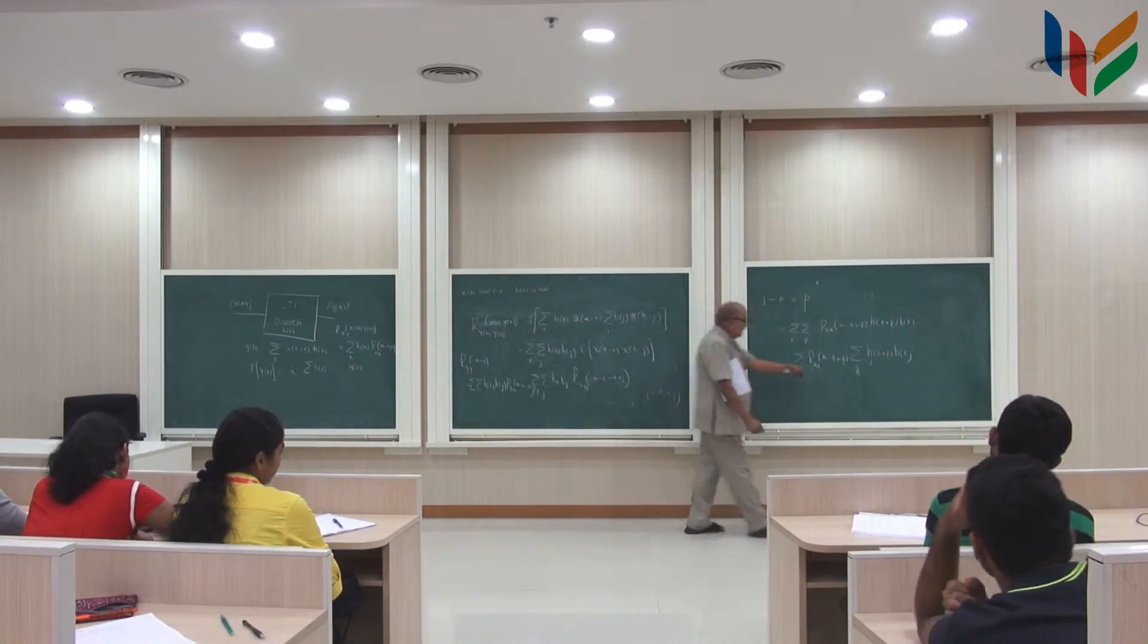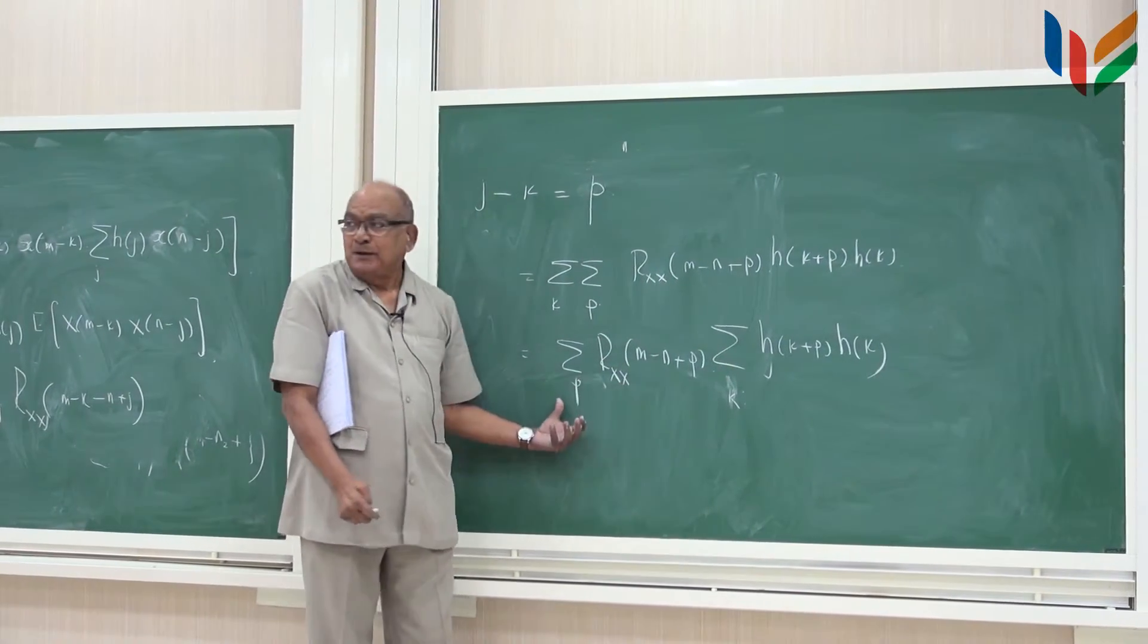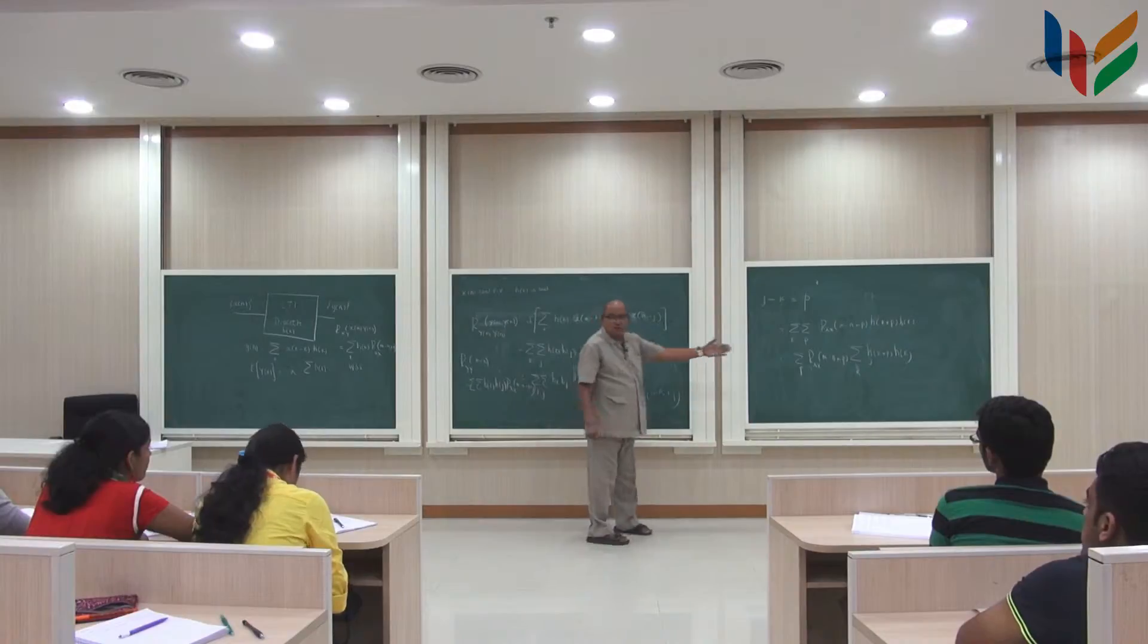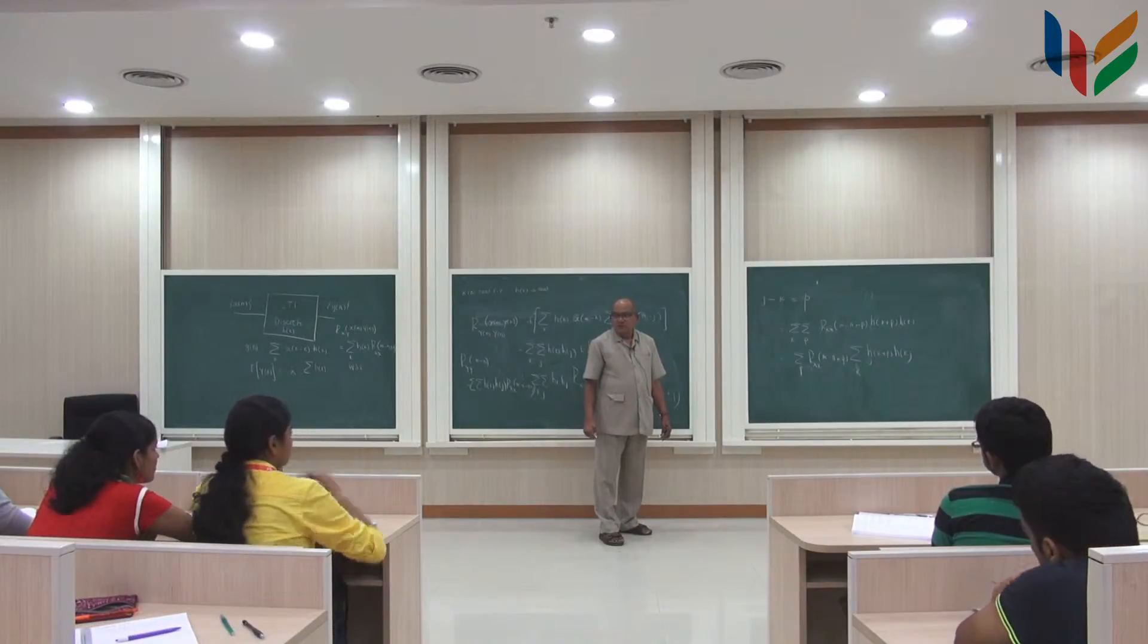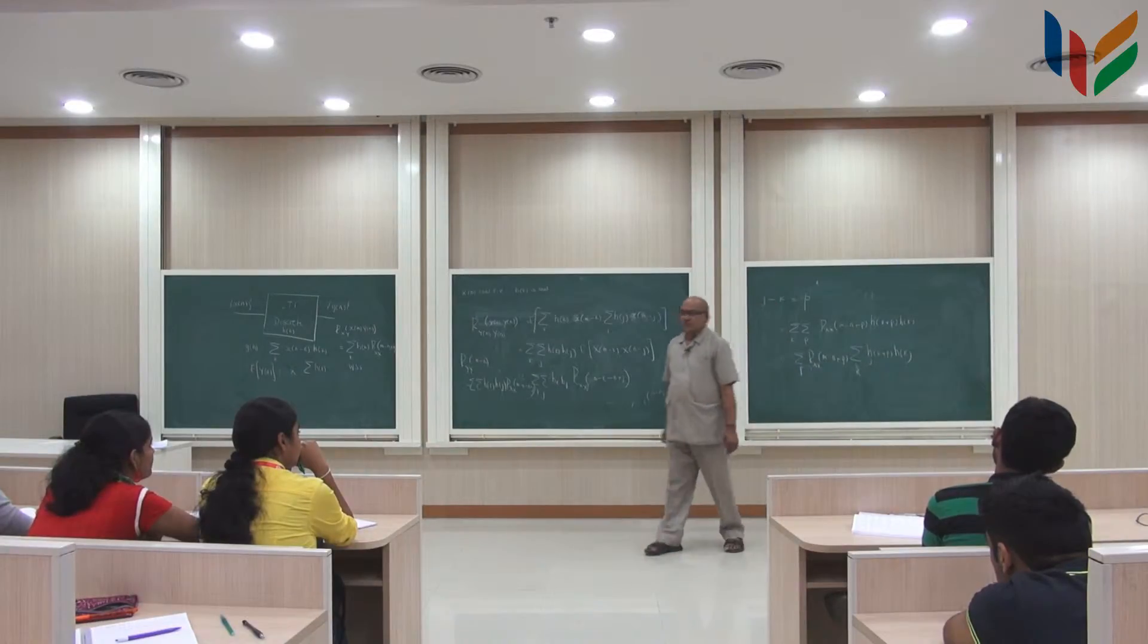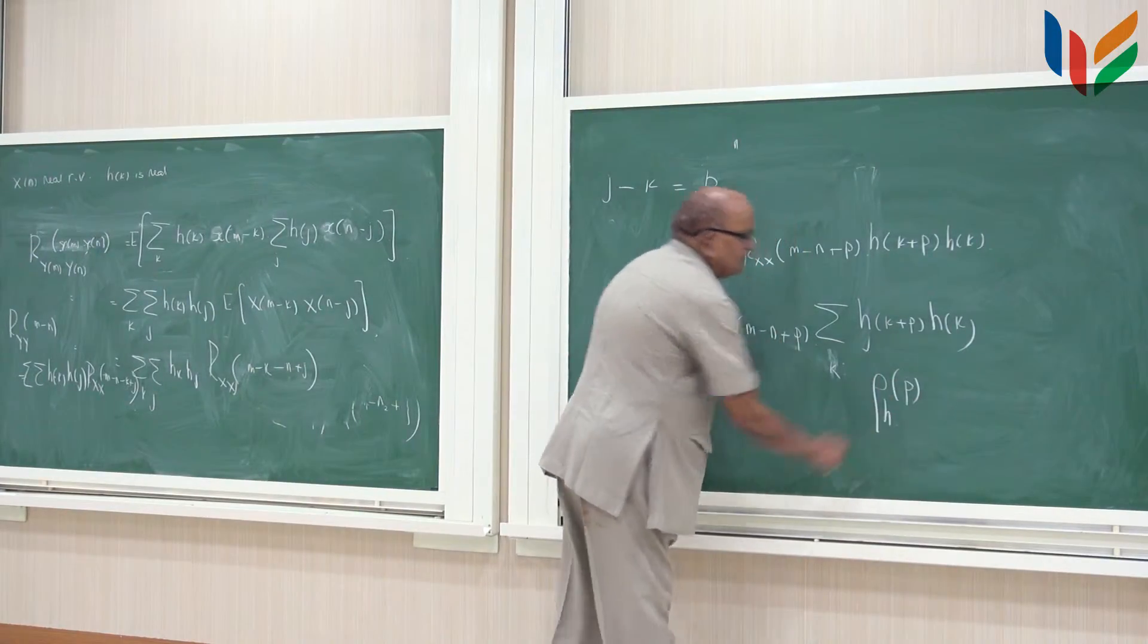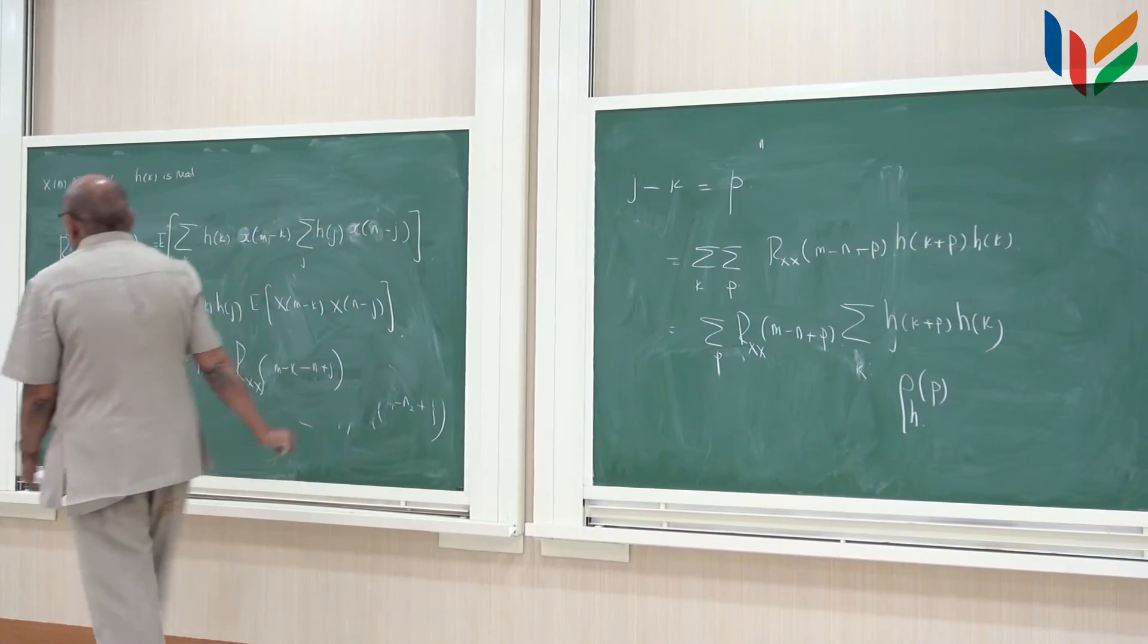So now here I sum over k will be function of p. Whatever I get here, I substitute here, multiply this sum over p. And what is the second part equal to? What kind of form is this? It is also correlation function of the response h k. If you call this as some rho, so you end up into a very simple expression that r y y.